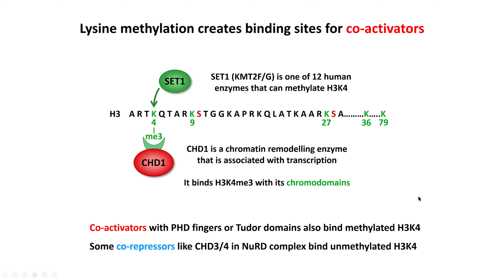Conversely, some co-repressors like CHD3 and CHD4 proteins present in the NuRD complex — a very potent repressor complex — need to bind to the H3 tail and are involved in modifying H3 lysine 9. But it cannot bind to this tail if lysine 4 is methylated; it only binds when lysine 4 is unmethylated. So these methyl marks are very important in determining which coactivators or repressors can bind and when.